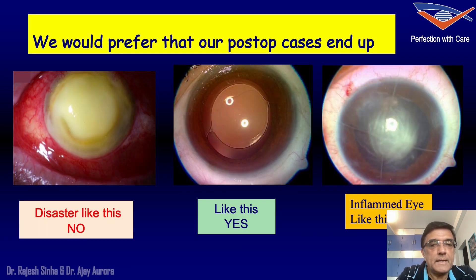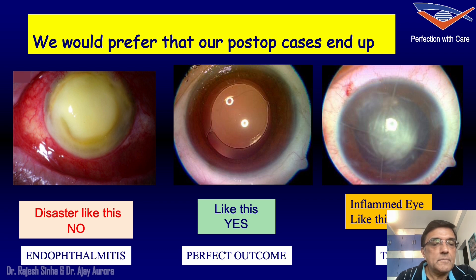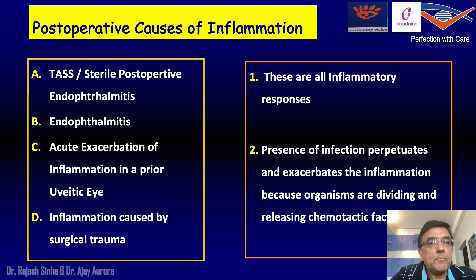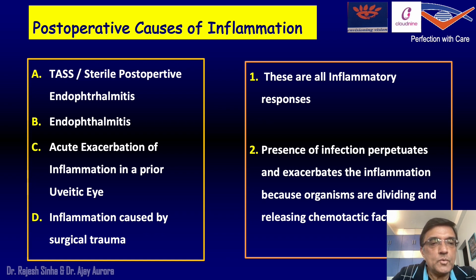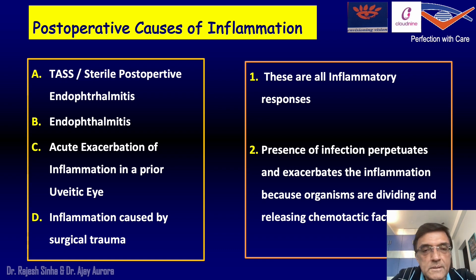All of us would like to have cases work out well, like this perfect outcome, and not a case disaster like this, which is an endophthalmitis or an inflamed eye — which is a TAS. Whenever we operate, the postoperative course can involve inflammation, and this could be TAS or a sterile postoperative endophthalmitis. Endophthalmitis is an acute exacerbation of inflammation in a prior uveitic eye or inflammation caused by surgical trauma. The major difference is that in endophthalmitis there will be infection present, which perpetuates and exacerbates the inflammation.